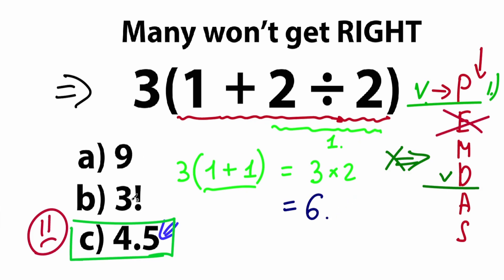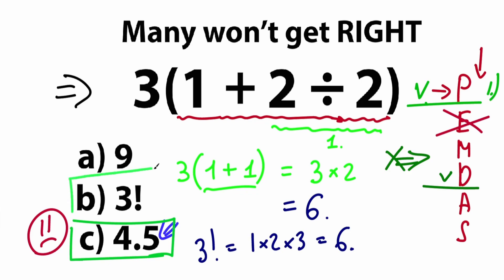We have 3 times 2 equals 6. Looking at the answer options — we have 9, we have 3 factorial, and we have 4.5. Let's remember 3 factorial from school: 3! is the product from 1 to 3, so 1 times 2 times 3 equals 6. So 3 factorial equals 6, the same as our answer. The correct answer is option B. According to this algebra question, the answer is 6.